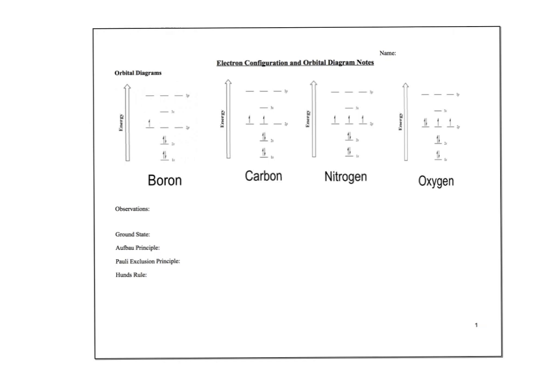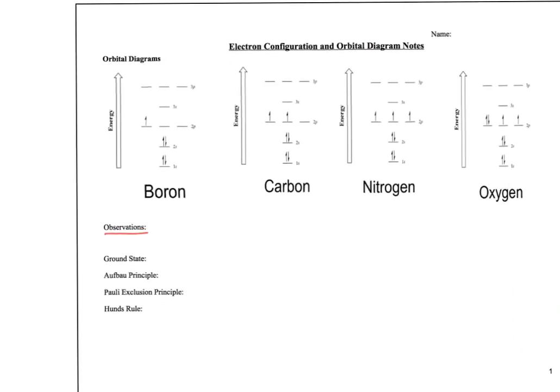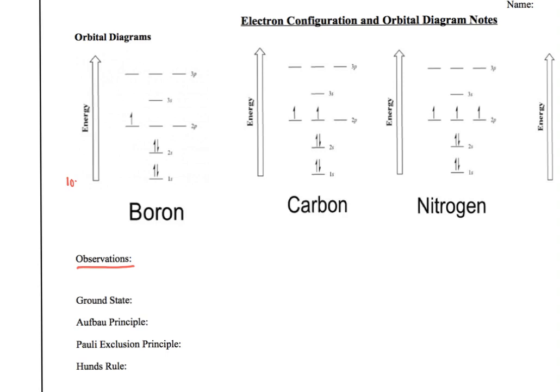Hopefully you were given a few minutes to look at these orbital diagrams for boron, carbon, nitrogen, and oxygen, and had a chance to write down some observations. You've never seen these before, so I don't expect you to know what they're explaining, but if you give yourself a few minutes to look and observe, you might be able to figure some things out. I'm going to zoom in — we have low energy down here and high energy up here, and the energy seems to be increasing. We have these little labels: 1s, 2s, 2p, 3s, 3p — some have one line at the bottom, some have multiples like three, and there are little arrows on these lines.